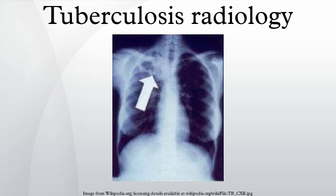Infiltrate or consolidation: an opacification of airspaces within the lung parenchyma. Consolidation or infiltrate can be dense or patchy and might have irregular, ill-defined, or hazy borders. Any cavitary lucency within the lung parenchyma, with or without irregular margins, that might be surrounded by an area of airspace consolidation or infiltrates, or by nodular or fibrotic densities, or both.